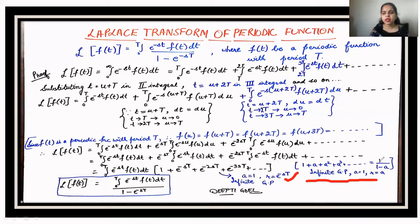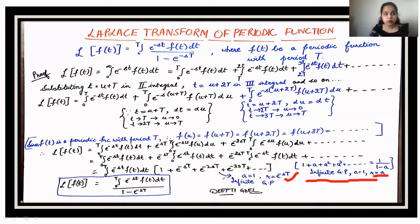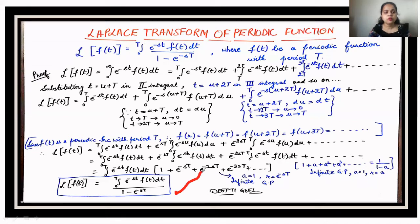The sum of an infinite geometric series is a/(1−r). Since a = 1 and r = e^(-sT), the sum equals 1/(1 − e^(-sT)). Substituting back, we get the Laplace transform as the integral from 0 to T of e^(-st) f(t) dt, multiplied by 1/(1 − e^(-sT)). This completes the derivation of the formula for the Laplace transform of a periodic function.